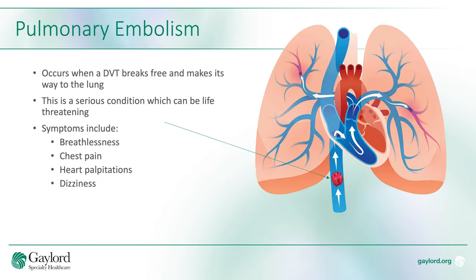A pulmonary embolism occurs when a DVT breaks free from where it formed and makes its way to the lung. This is a serious and often life-threatening condition. Symptoms can include breathlessness, chest pain, heart palpitations or rapid heart rate, and dizziness.